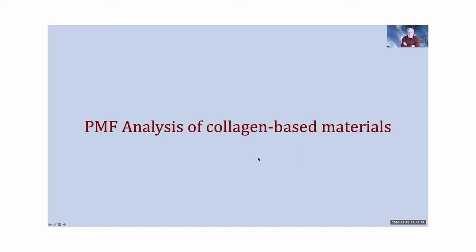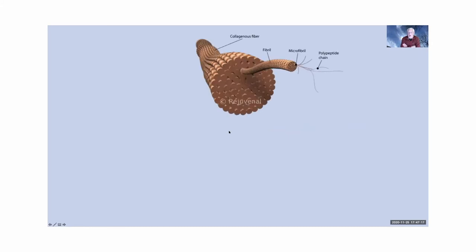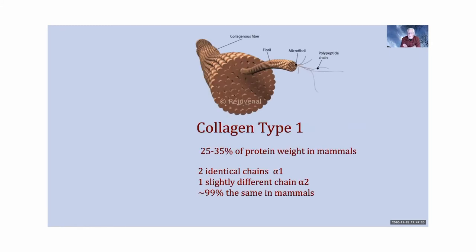The other area I want to discuss is collagen-based materials, which are quite pervasive in cultural heritage. Collagen type 1 comprises something like 25 to 35 percent of the protein weight in mammals. It's composed of two identical alpha-1 chains and one slightly different alpha-2 chain. About 99 percent of this protein is the same in mammals, but there are slight differences from one mammal to another.